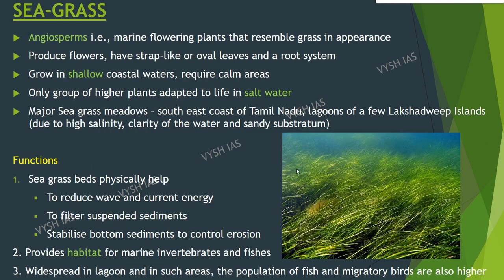Sea grass: These are angiosperms, that is marine flowering plants that resemble grass in appearance. They produce flowers, have strap-like or oval leaves and a root system. They grow in shallow coastal waters with sandy bottoms and require calm areas. They are the only group of higher plants adapted to life in salt water. Major seagrass meadows in India occur along the southeast coast of Tamil Nadu and in lagoons of a few Lakshadweep islands, with some also found in Andaman and Nicobar Islands.